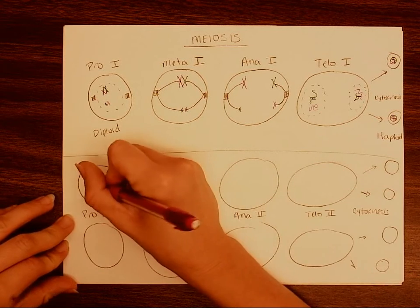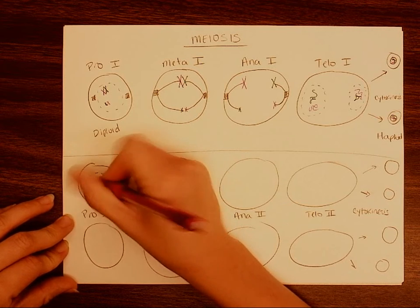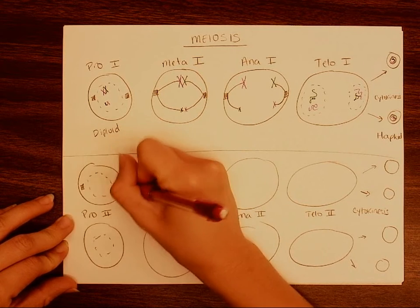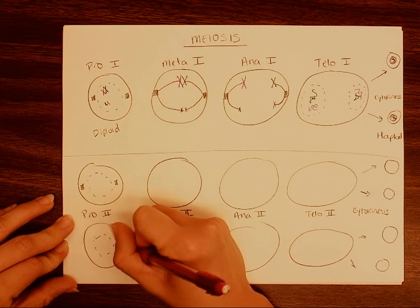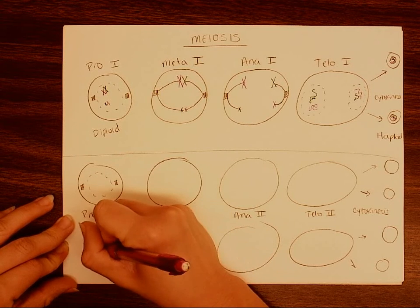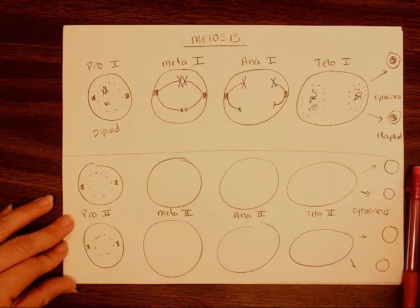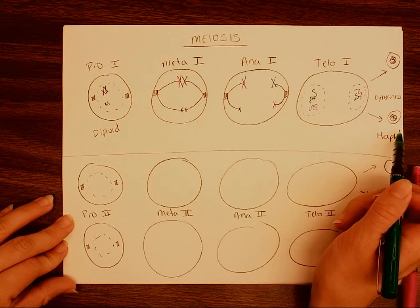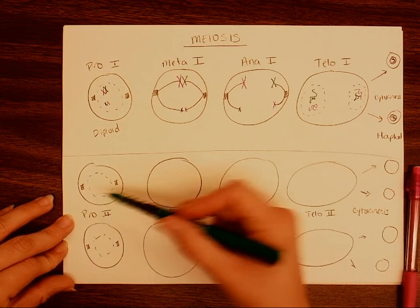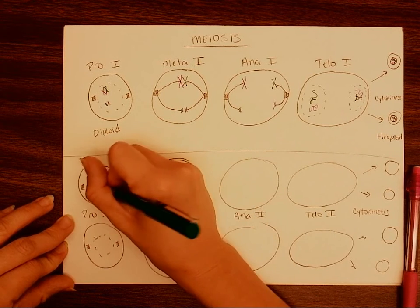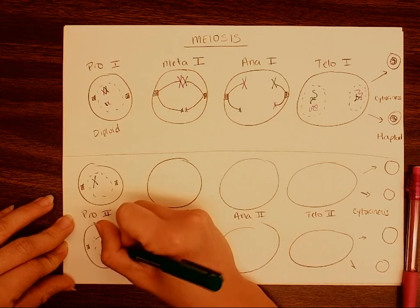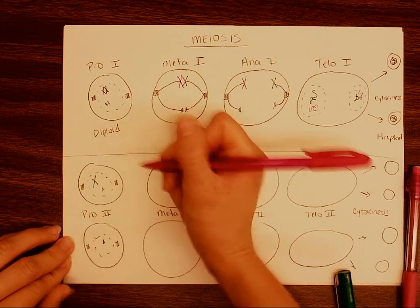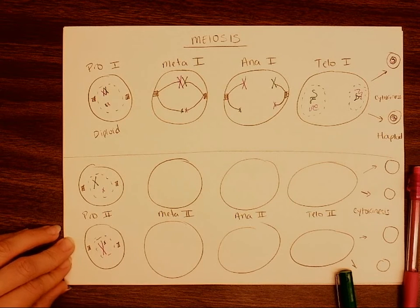In prophase II, the nucleus is going to break down, and we see that these centrioles are going to form and be by the nucleus. Inside the nucleus, our chromatin is going to coil back up into a chromosome. So I'm going to put a big green one up here and a little green one down here, meaning the other cell has a little pink and a big pink.